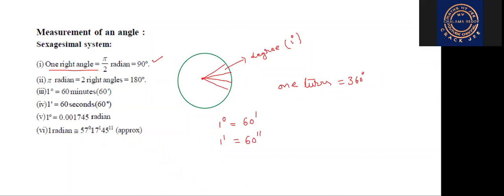One degree means approximately 0.01745 radians. Now, one turn dividing into 360 parts — each part is called one degree. One degree is equal to 60 minutes. One minute is equal to 60 seconds. Students, are you understood?